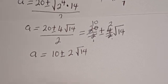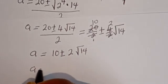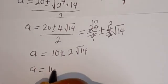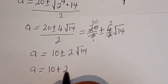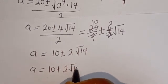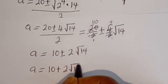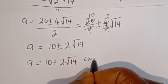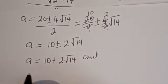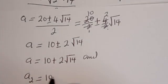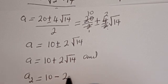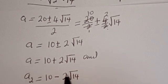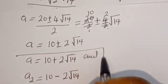Therefore, A1 is equal to 10 plus 2 root 14, and A2 is equal to 10 minus 2 root 14. These are the values of A.